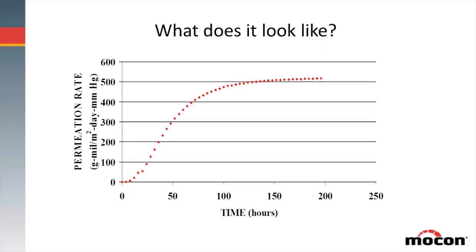People often ask what does permeation look like. Well, these water vapor molecules move into a package wall, get absorbed into it, and then come out on the other side. When you start a test where the material is totally void of water vapor, you won't see anything come through on the other side. The graph shows what we measure on that other side: it comes up slowly, and then over time we reach an equilibrium level. That's what we're normally measuring — that equilibrium level. So it's very common to see this uptake curve to reach equilibrium.